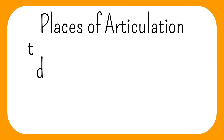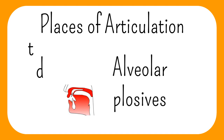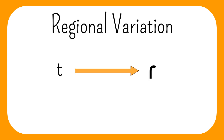T and D are the alveolar plosives, formed by the blade of the tongue making contact with the alveolar ridge behind the upper teeth. There's a lot of regional variation in the pronunciation. In some dialects and informal language, the T turns into a tap, closely resembling a D, and is transcribed using this symbol. In some British dialects, the glottal stop is sometimes used in place of the T.